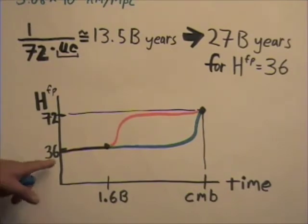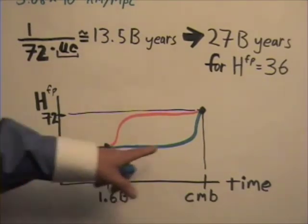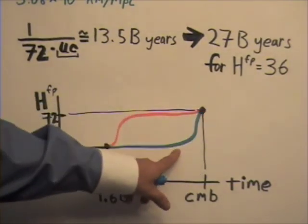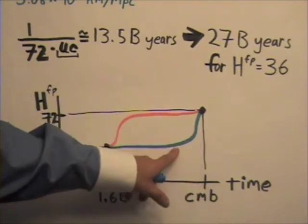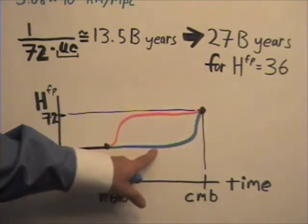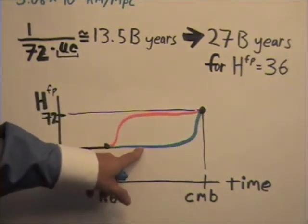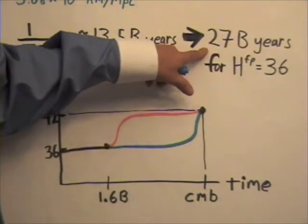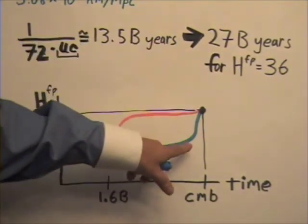On the other hand, if the curve looked like this, and the drop-off in Hubble constant was more at times closer to the big bang, then the age of the universe would be more towards the 27 billion year end of the spectrum.